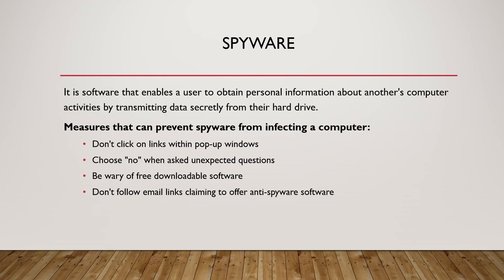The second risk in making use of the Internet is spyware. It is a software that enables a user to obtain personal information from another's computer activities by transporting data secretly from the hard drive.